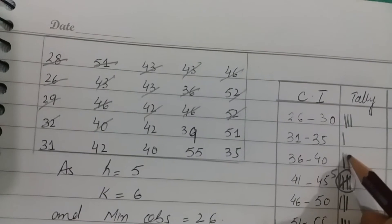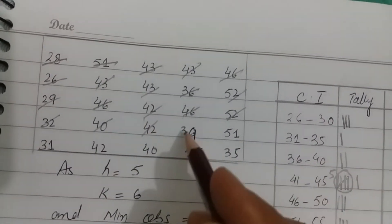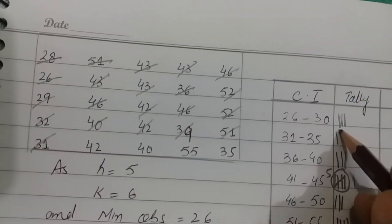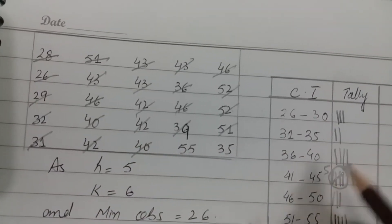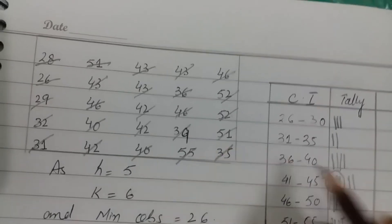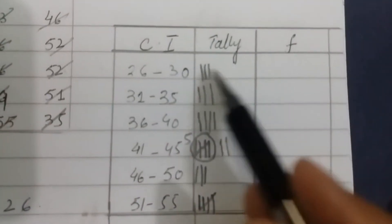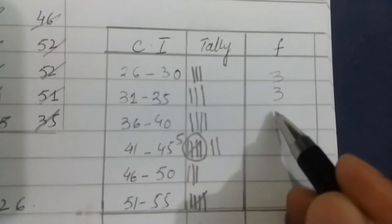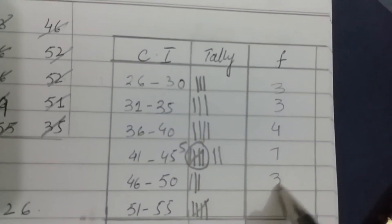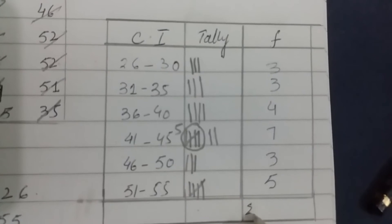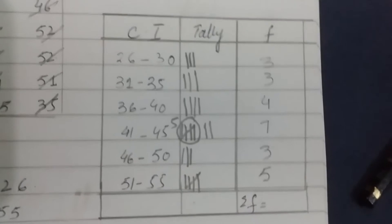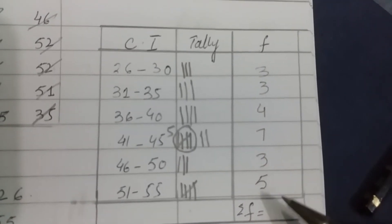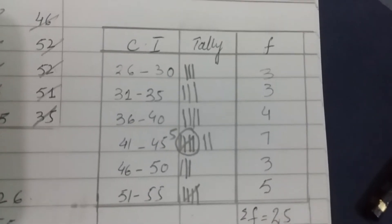After completing all tally marks for the remaining observations, we count the tallies for each class. The frequencies are: 3, 3, 4, 7, 3, and 5. An important check: the sum of all frequencies must equal the total number of observations. Here 3 plus 3 plus 4 plus 7 plus 3 plus 5 equals 25, which confirms the frequency distribution is correct.